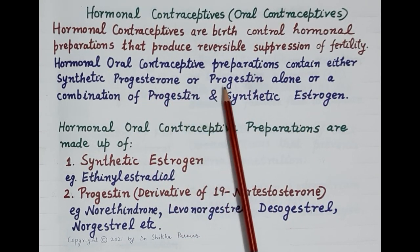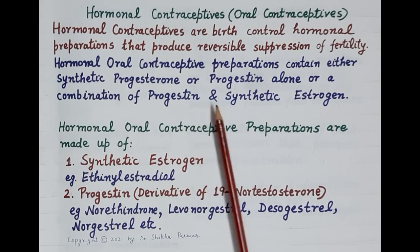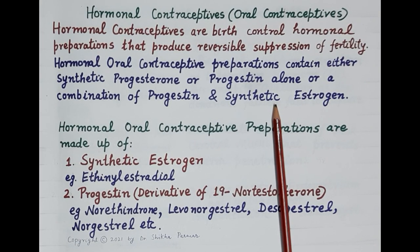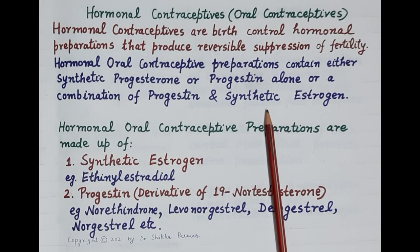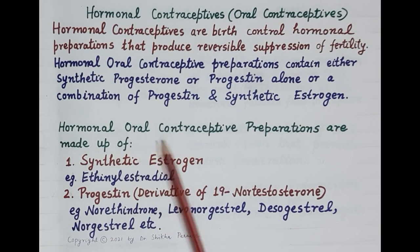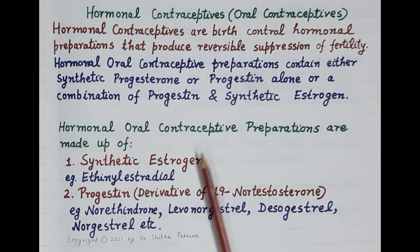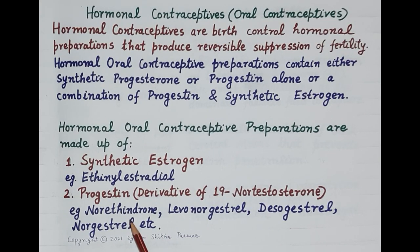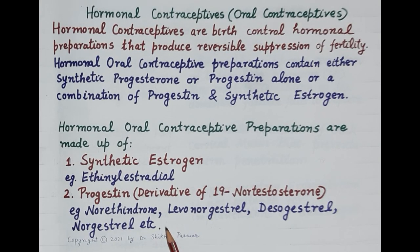Hormonal oral contraceptive preparations contain either synthetic progesterone, that is progestin alone, or a combination of progestin and synthetic estrogen. The most commonly used synthetic estrogen is ethinyl estradiol, and progestins are derivatives of 19-nor testosterone, like norethindrone, levonorgestrel, desogestrel, norgestrel, etc.